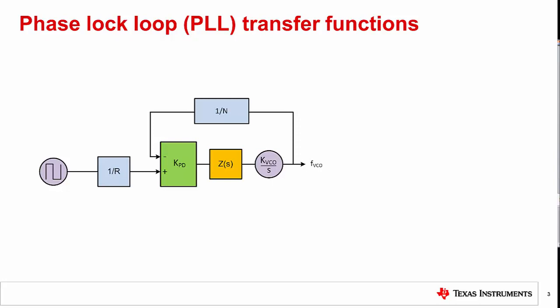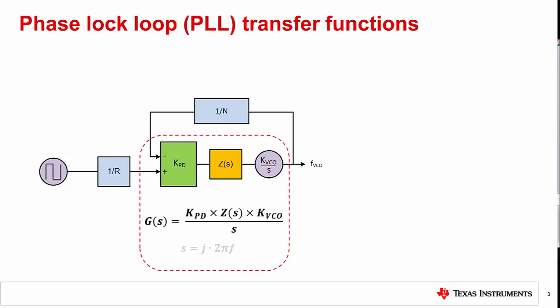PLL transfer functions can be derived by classical control loop theory. G(s) is sometimes called open loop gain, or open loop transfer function, and is defined as the gain from the input of the phase detector to the output of the PLL, where S is the complex frequency. The open loop gain is comprised of the phase detector charge pump gain constant KPD, the loop filter transfer function Z(s), and the VCO input voltage to phase relationship KVCO over S. Although the frequency path is simply 1 over N, we refer to it now as H to align with standard control theory notation for feedback.